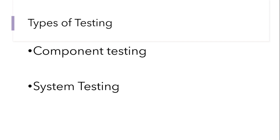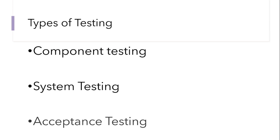From component testing we move on to system testing. This is where we put all the various components together to form a whole. From the architectural diagram, we saw components like fees management and class management — when we integrate all of them together, we then test to see if everything will function perfectly once they've been fitted together.